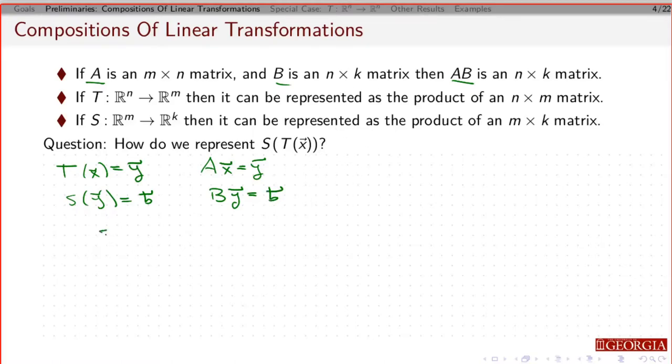So now let's look at this transformation that's given by the composition. So if I compose S of T of x, does that make sense? So x is something in ℝⁿ. T(x) gives me something in ℝᵐ. S is going to take something in ℝᵐ and give me something in ℝᵏ. So that's going to be some vector in ℝᵏ. So what does this mean?